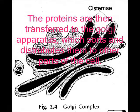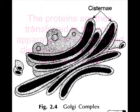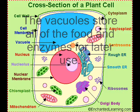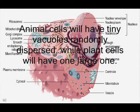The proteins are then transferred to the Golgi apparatus, which sorts and distributes them to other parts of the cell. The vacuoles store all of the food and enzymes for later use. Animal cells will have tiny vacuoles randomly dispersed, while plant cells will have one large one.